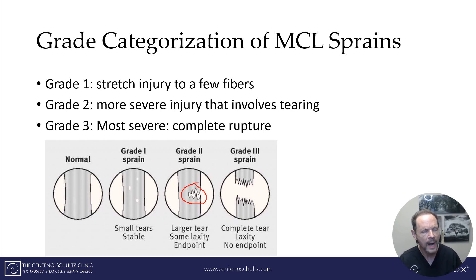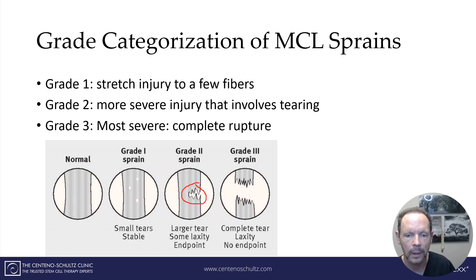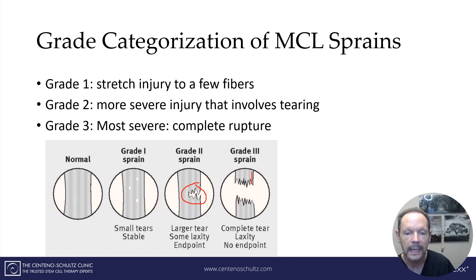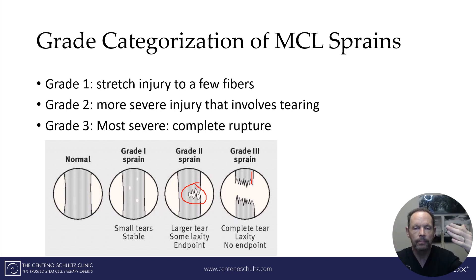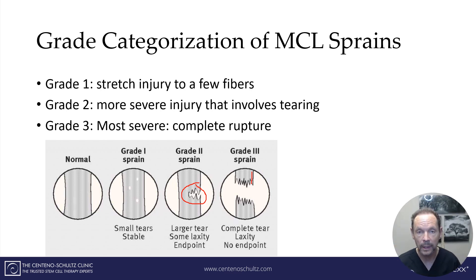Grade three is the most severe injury of the collateral ligament — that's where it is actually torn apart. It's a complete rupture. What was previously a uniform connection is now broken into two pieces. This is a very severe injury and will require surgery.